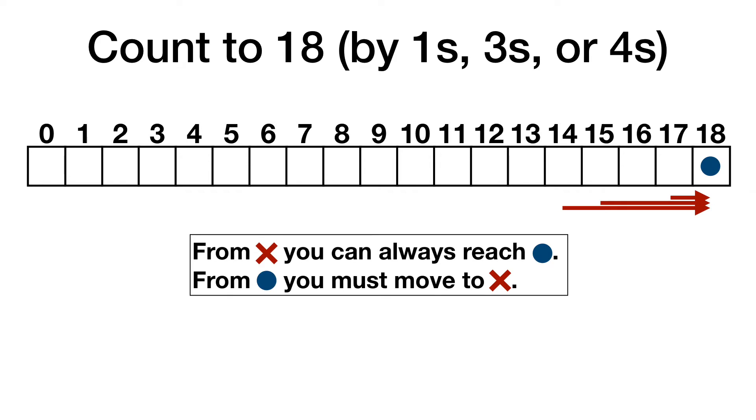The squares that can reach 18 in one turn are 14, 15, and 17. From 16, we can only move to 17. From 12 and 13, we can get to 16, so those get a red X. At 11, we have to move to a red X, so 11 gets a blue dot. From 7, 8, and 10, we can reach 11. From 9, we have to move to an X.